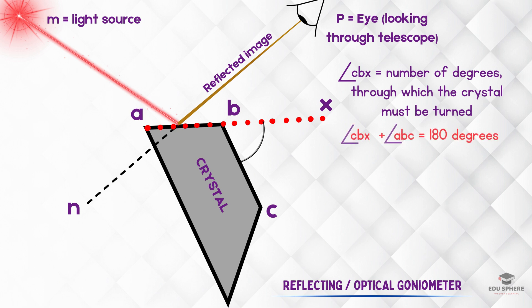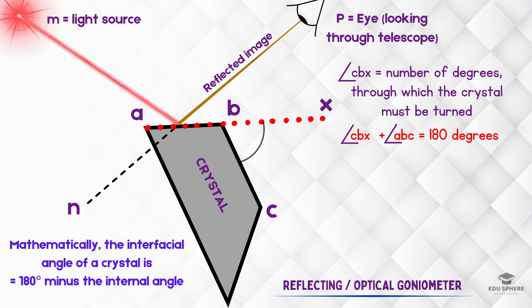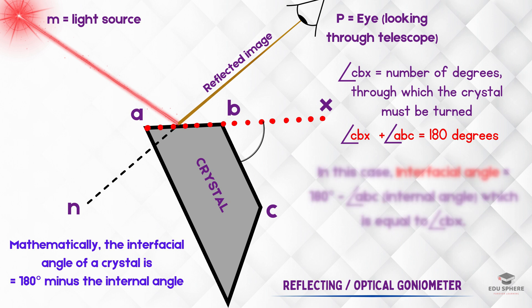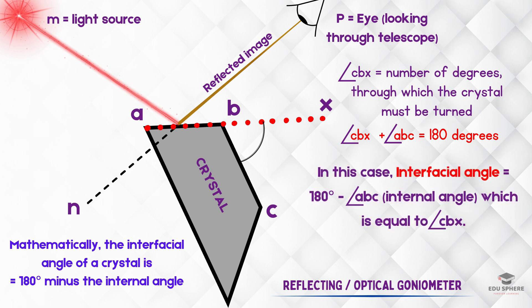Now, this measured angle CBX is the supplement of the internal angle ABC between the two faces. We know that supplementary angles are those that sum up to 180 degrees. We have already discussed that mathematically, the interfacial angle of a crystal is calculated as 180 degrees minus the internal angle between the two faces. Therefore, in this case, the interfacial angle is equal to 180 degrees minus angle ABC. Here we can see that the result we get is equal to the measured angle CBX. So, the reflecting goniometer gives directly the interfacial angle of a crystal.